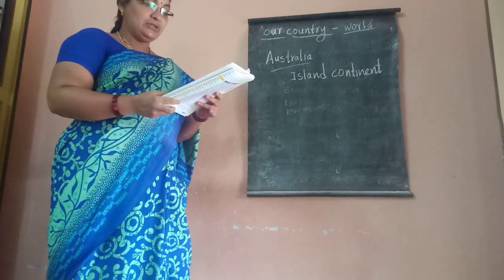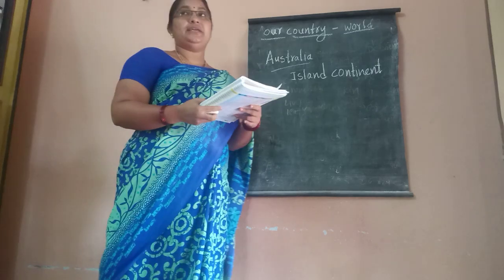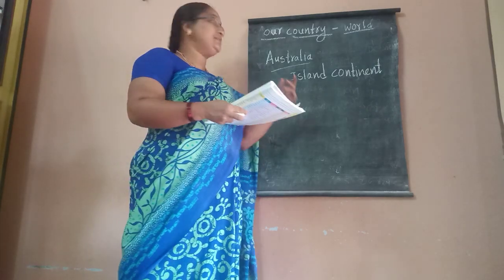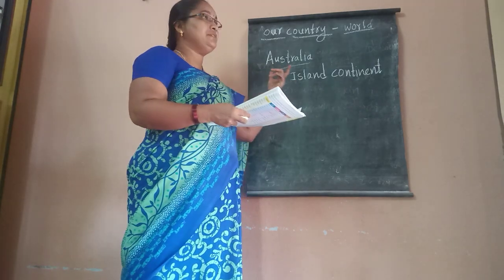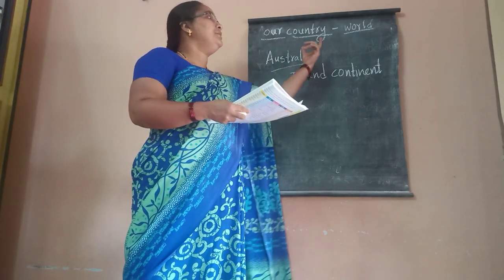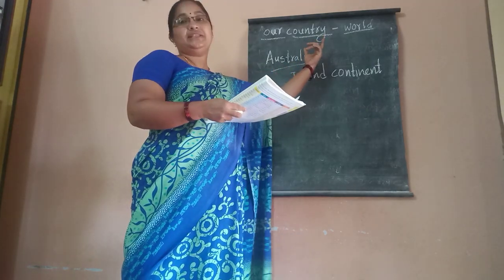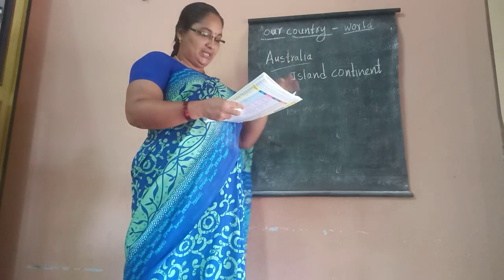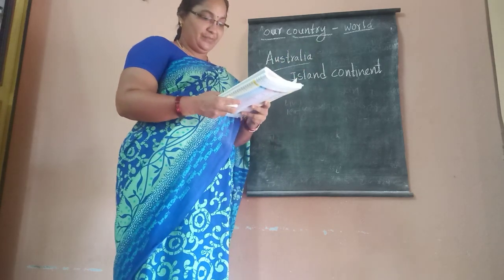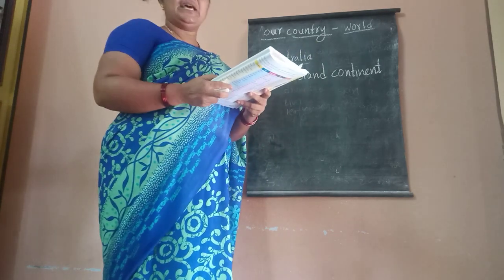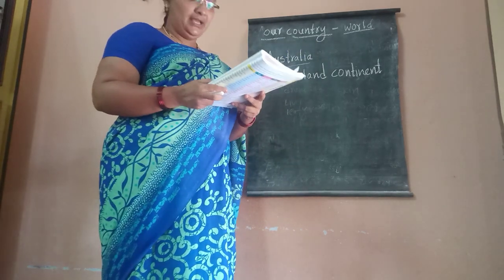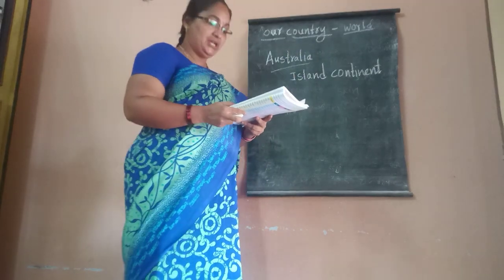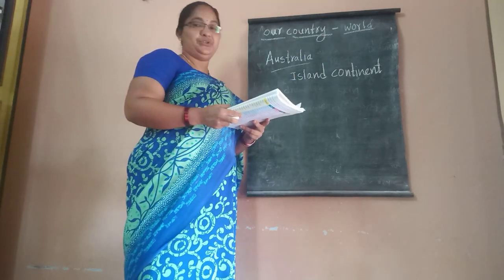Australia is located to the south east of Asia. It is surrounded by the Indian Ocean and the Pacific Ocean.